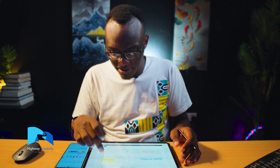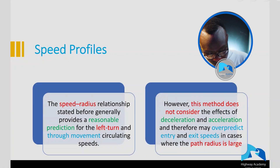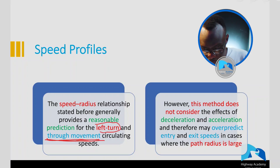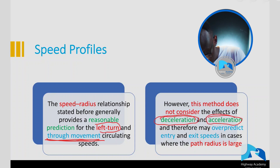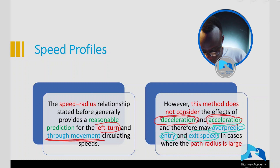What should you know when designing a roundabout? This speed relationship normally provides a predictable way of determining the different radii. You can easily predict the left turn, through movements, and the circulating speed. Once you know the radius, studies have developed a formula that helps you estimate the speed. Most of the time this method does not include effects of deceleration, so in situations where vehicles are decelerating and accelerating, it could over-predict the entry and exit path curves.